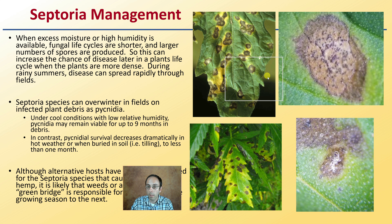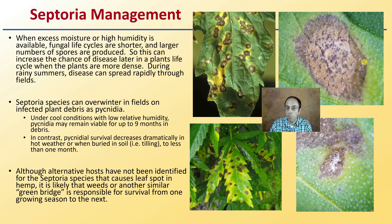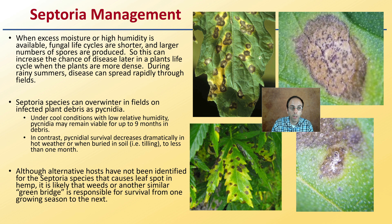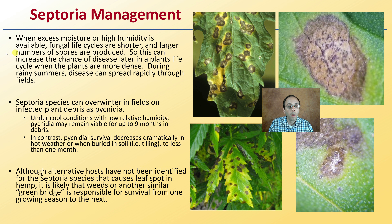When excessive moisture or high humidity is available, the fungal life cycles are shorter and a larger number of spores are produced — both negative outcomes if you're trying to mitigate this disease. This can increase the chance of disease later in the plants' life cycle when the plants are more dense.